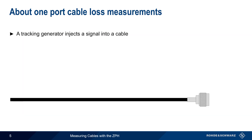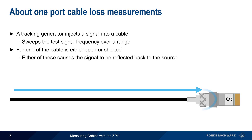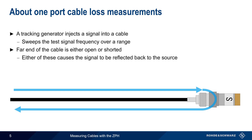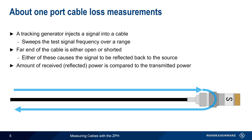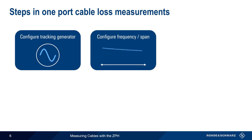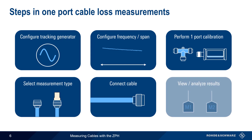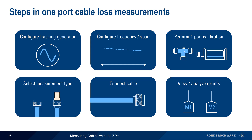In one-port measurements, a tracking generator is used to inject a signal into a cable. This is a generator which is built into the analyzer, and whose frequency is swept over a user-defined range. The far end of the cable is either left open, or is terminated with a short. Either of these conditions will cause the signal reaching the end of the cable to be reflected back to the source. At the source port, the amount of received or reflected power is compared to the known transmitted power, and the ratio or difference between these quantities is the cable loss, which is normally expressed in units of dB and plotted as a function of frequency. There are six basic steps in making one-port cable loss measurements: configuring the tracking generator, configuring the frequency and span, performing a one-port calibration, selecting the cable measurement or termination type, connecting the cable under test, and viewing and/or analyzing the results. In the next few minutes, we'll go through each of these step by step.